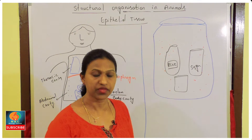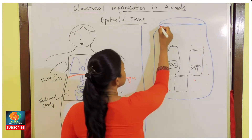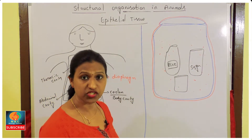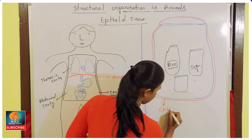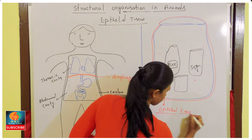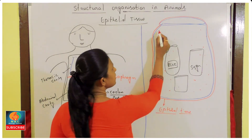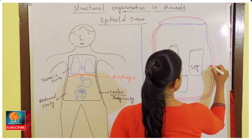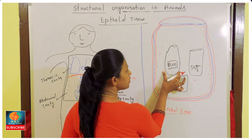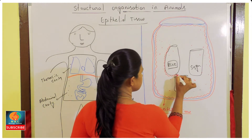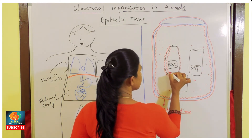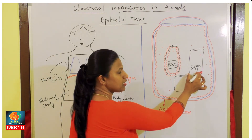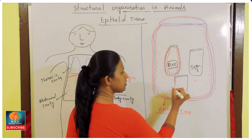Now let us compare it to the epithelial tissue. This is the epithelial tissue which is facing the outside environment, that is facing the air — this is the covering tissue or epithelial tissue. Like that, the epithelial tissue also covers inside as well. Inside also you can see the presence of this plastic cover analogy — the covering layer.